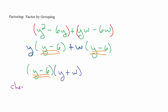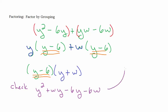To check: y times y is y², y times w is wy, negative 6 times y is negative 6y, and negative 6 times w is negative 6w — that is what we started with. If you rearrange the terms you get the same thing, and yw versus wy are the same by the commutative property.